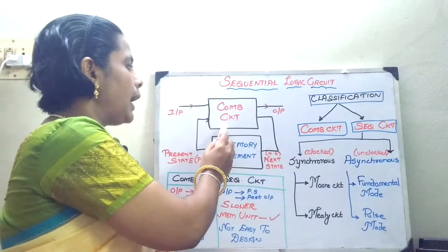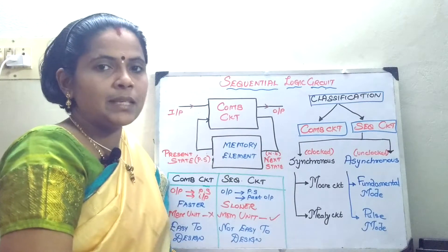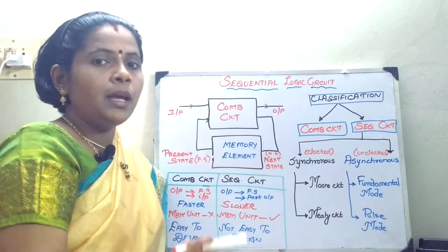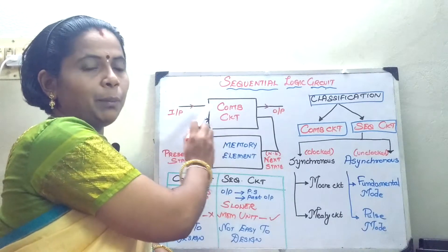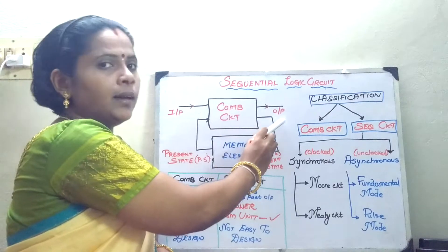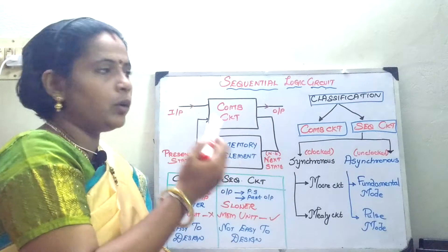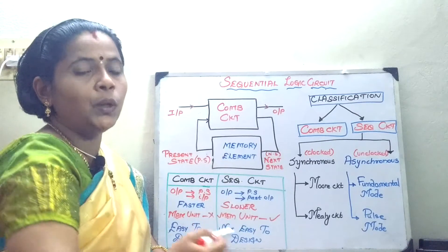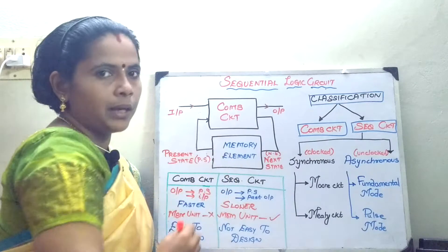In the last class we have seen about the combinational circuit. What is a combinational circuit? Whenever I give an input, depending upon the present state of the input, I am going to get the output. Whereas, whenever I want to convert this circuit to a sequential circuit, I have to add a memory element.